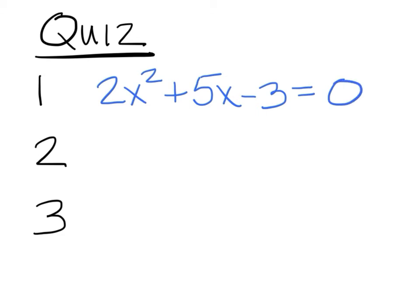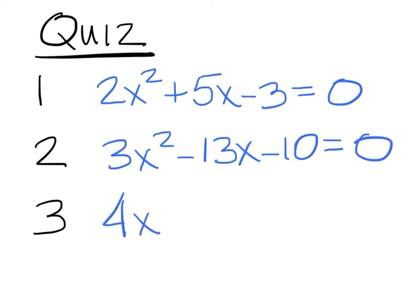This will be a short quiz, and you only need to do one, but you can do all three if you want. They are worth 10 points each. If you get all three, you get 20 extra credit points. The problems are 2x squared plus 5x minus 3 equals 0, 3x squared minus 13x minus 10 equals 0, and 4x squared minus 35x plus 24 equals 0. Come up and get one of those quiz papers, and that's what you're going to put your answers on.